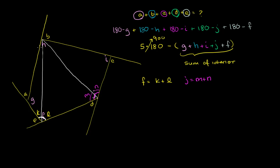H is up here — it's this whole angle. Let's say H equals O plus P plus Q, where O, P, and Q are the sub-angles. I wanted to split up these interior angles into parts that are already angles of the individual triangles. So H equals O plus P plus Q. Now we can write the sum of the interior angles as the sum of a bunch of angles that are parts of these triangles.